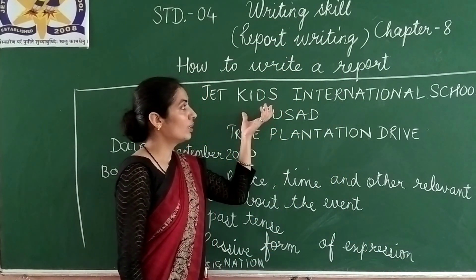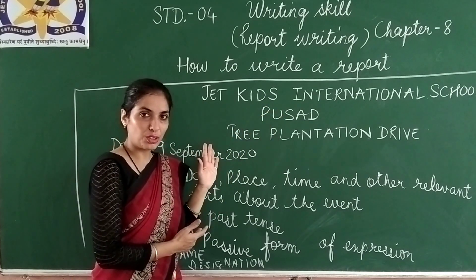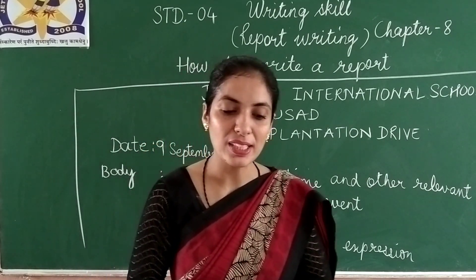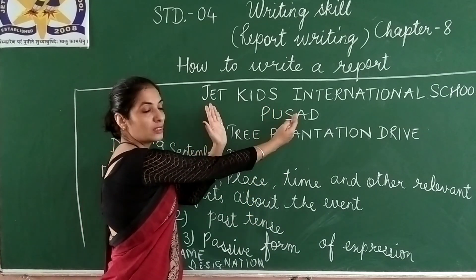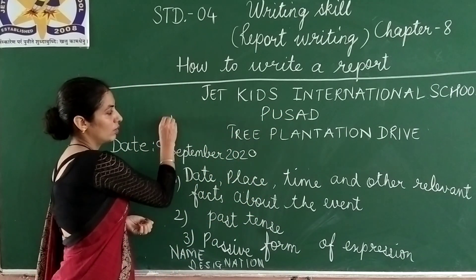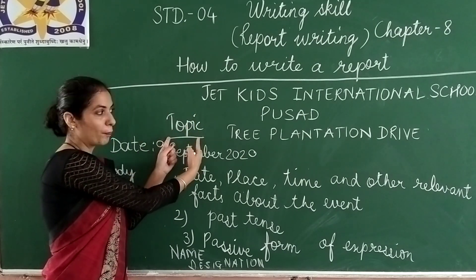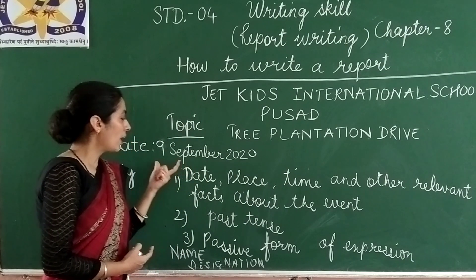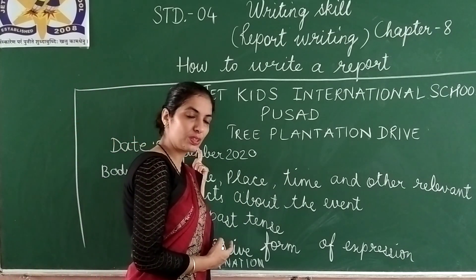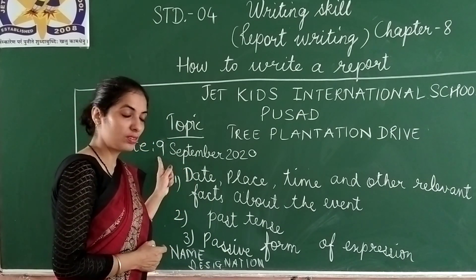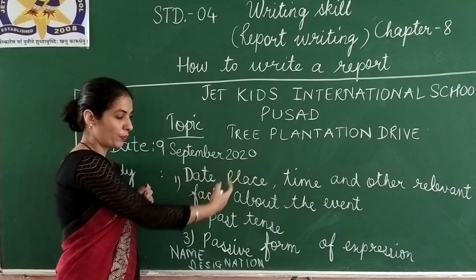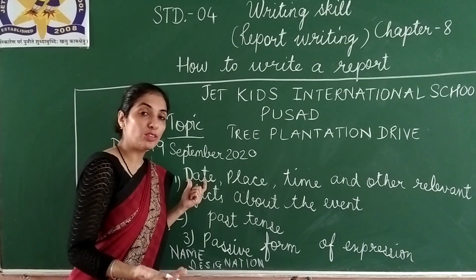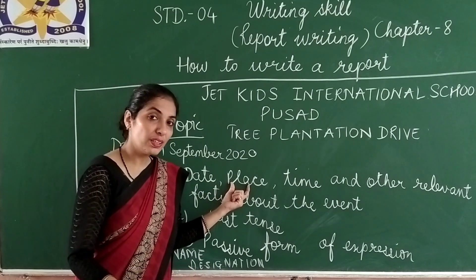Let's see the way of writing the report. We are learning this format and accordingly we will write in the books at page number 80. The first part is your school name, and then the topic — you can write 'Tree Plantation Drive' directly below the institution name without needing to write the word 'topic'. Then comes the date of writing the report. Today is 9th September, so it should be written as 9th September 2020.